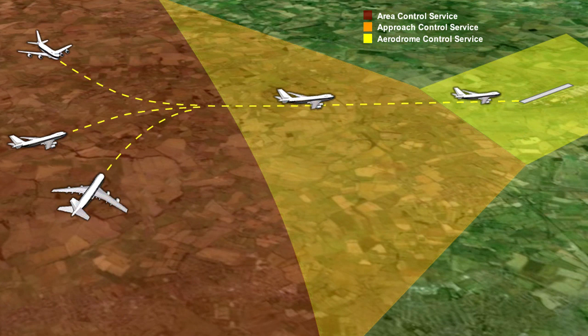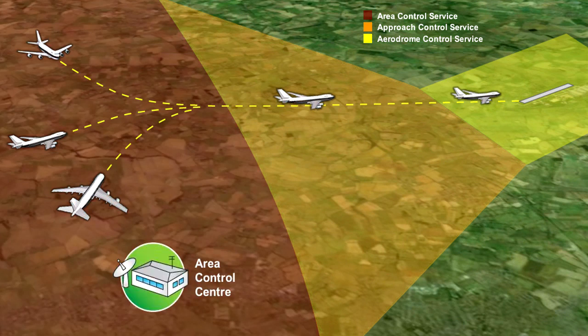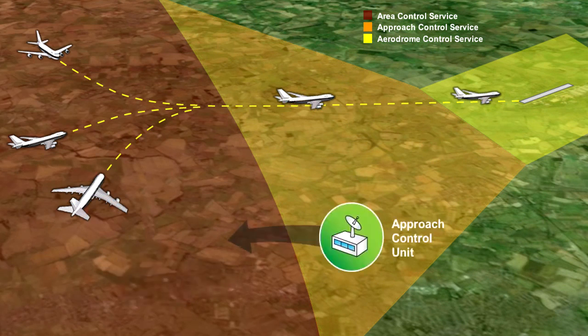These three services can be provided by various air traffic units. Area control service can be provided by an area control centre, ACC, or by the unit providing approach control service in a control zone or in a control area, which is designated primarily for the provision of approach control service.